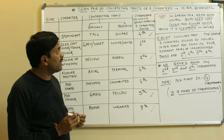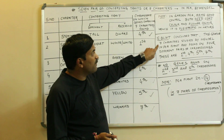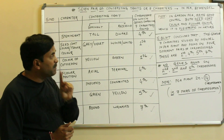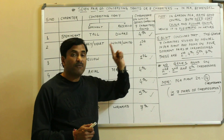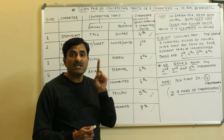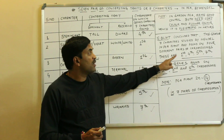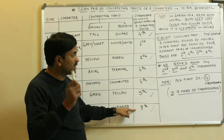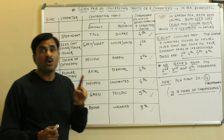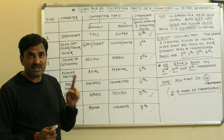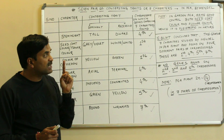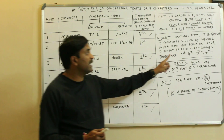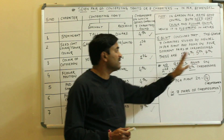What you notice here is that the genes of the seven characters studied by Mendel in the pea plant are found on four different pairs of chromosomes — chromosome numbers 1, 4, 5, and 7. No genes are found on chromosome numbers 2, 3, and 6. Whatever genes control the seven characters in the pea plant are found only on four pairs of chromosomes: the first, fourth, fifth, and seventh pair.